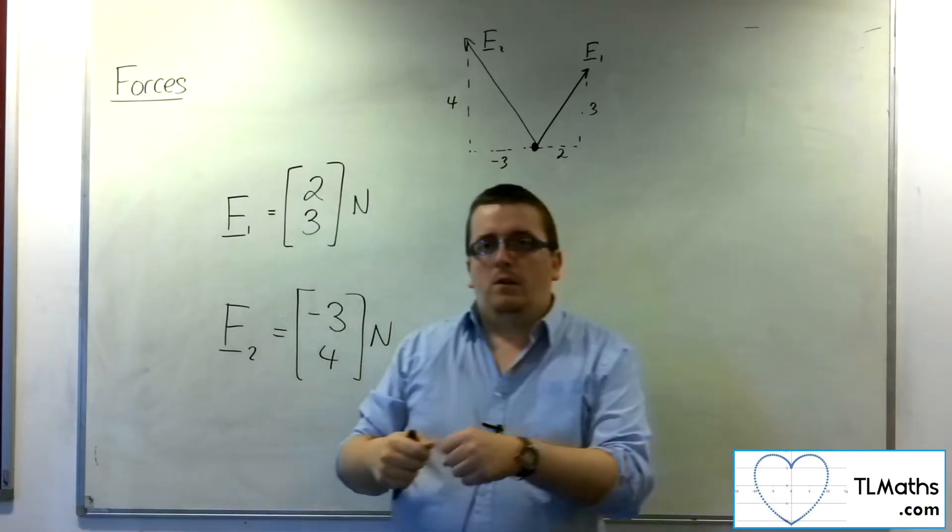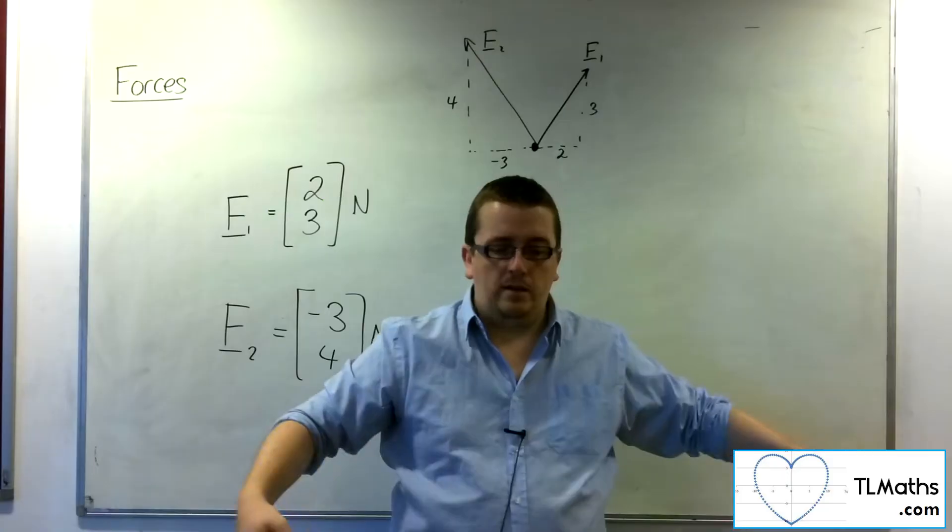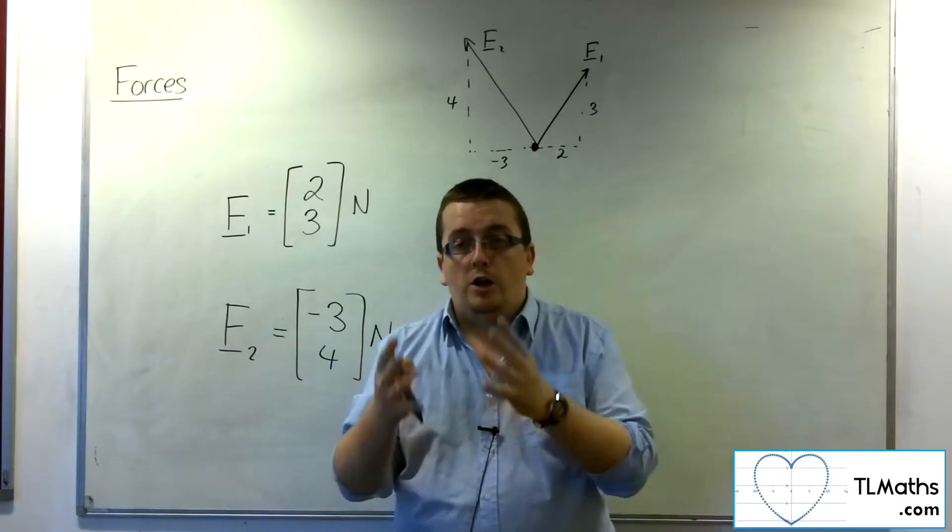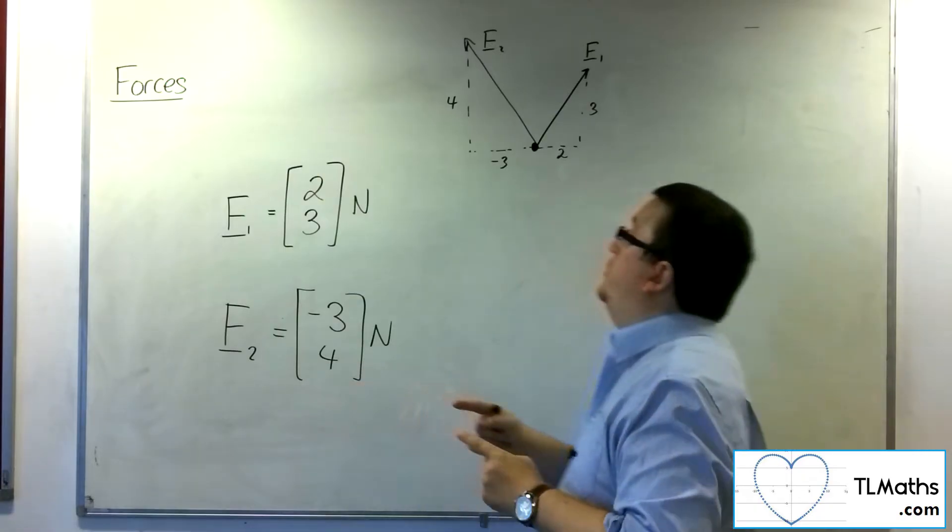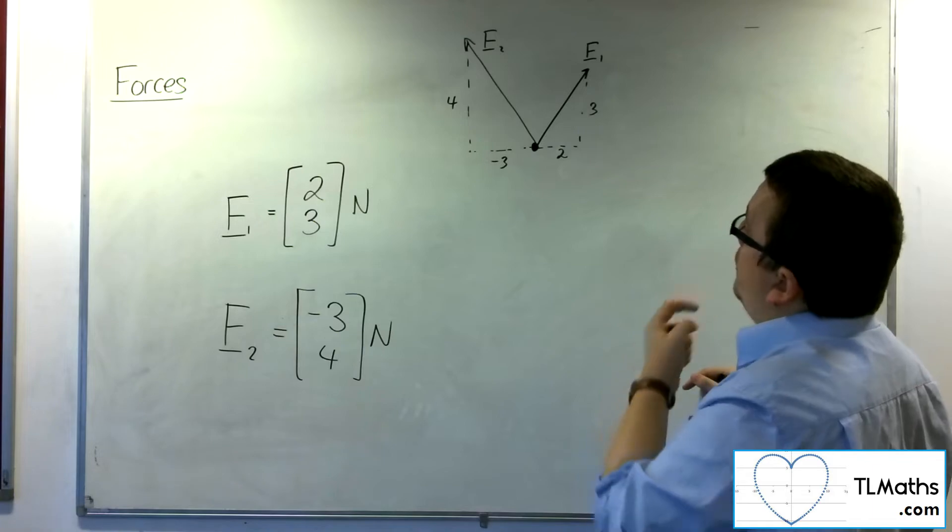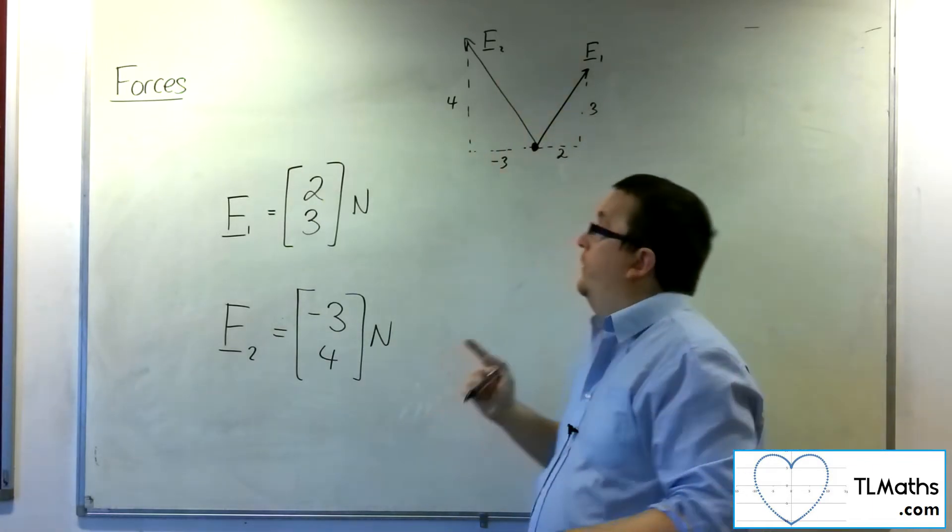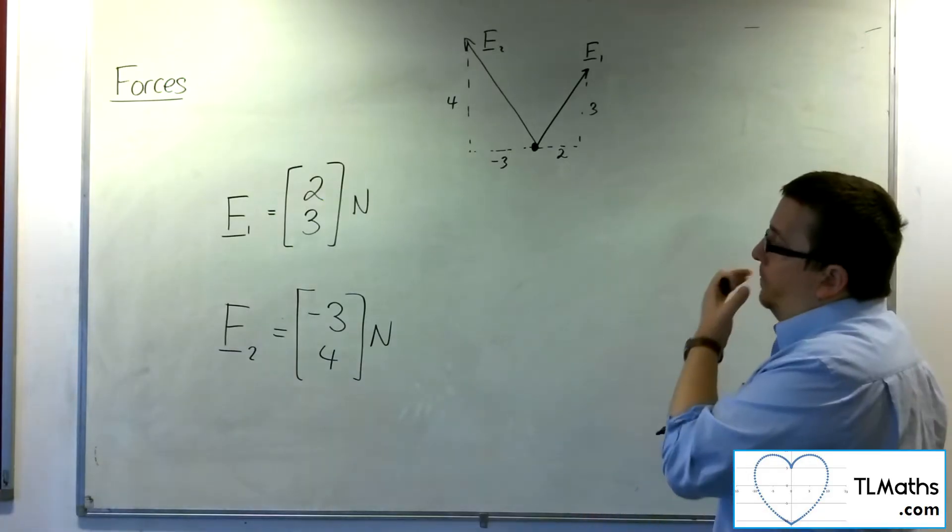So imagine kind of like lassoing something and then pulling it in two different directions. Like a ship that's coming into port and it's got two tugboats, two tugs that are pulling it in two different directions in order for it to travel down the line that they want. So where is it going to go?